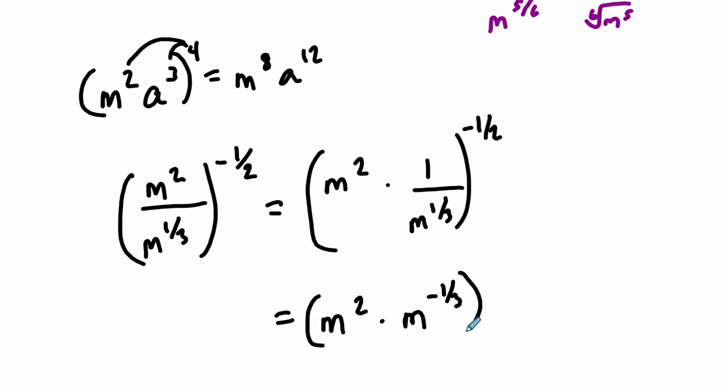All I did was I brought this one-third up top, so I wrote it as m to the negative one-third, definition of exponents. If you have a to the negative x, that equals one over a to the x. So I just reversed that process.